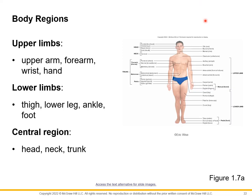This slide lists the specific components of each body region. The upper limbs include the upper arm, forearm, wrist, and hand. The lower limbs include the thigh, lower leg, ankle, and foot. The central region — head, neck, and trunk — is in the middle. The two arms are the upper limbs on the outside, and the two legs are the lower limbs at the inferior side.